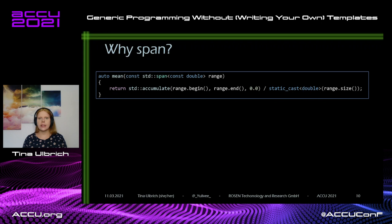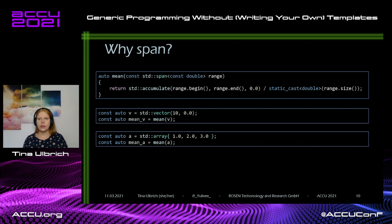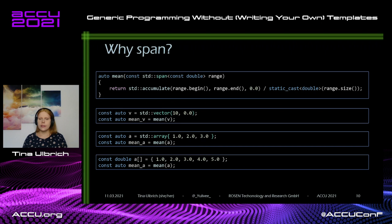Span allows us to write a function that takes a span of const doubles as an argument. A span is a wrapper for contiguous data — it holds a pointer to the data and a size, so it's a non-owning container. The data is stored elsewhere. Span provides a container interface including iterators, size and boundary checks, even for data that traditionally doesn't have them like C-style arrays. Now you can call the function with a vector, an array, a C-style array, or any other contiguous range. For non-standard containers, you can use the pointer to the data and the size to construct the span.